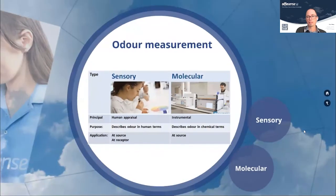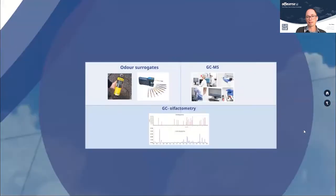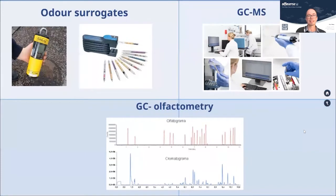The molecular analysis techniques fall into three broad classifications: odour surrogates, GC-MS (gas chromatography mass spectroscopy), and GC olfactometry, which is a relatively new and not yet widely used approach. Let's go through each of those in a little bit more detail.